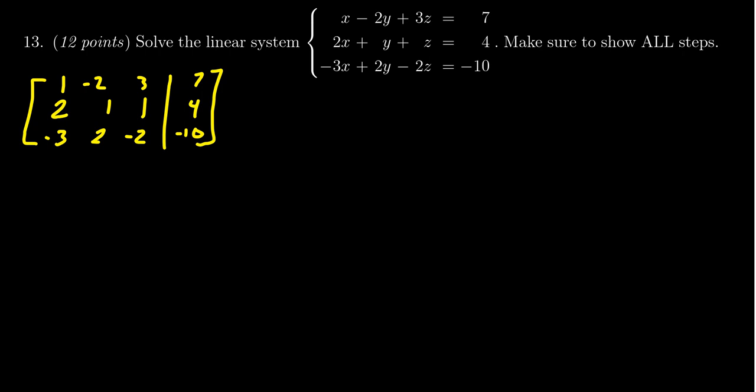Looking at the 1-1 position, I already have a 1 in that pivot position, so that's great. I'm going to utilize that to zero out everything below the 1. So I'm going to take row 2 and replace it with row 2 minus 2 times row 1. And for row 3, we're going to replace that with row 3 plus 3 times row 1.